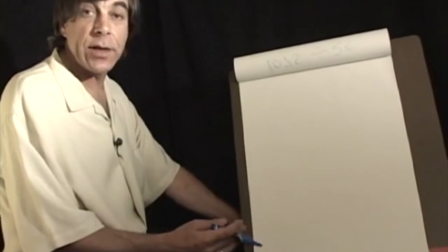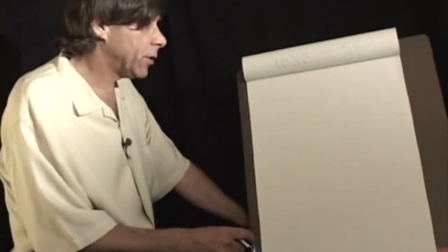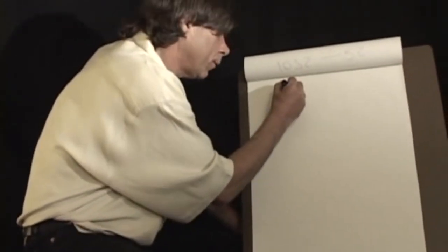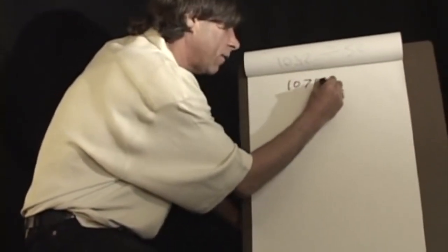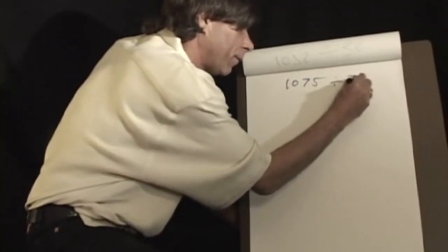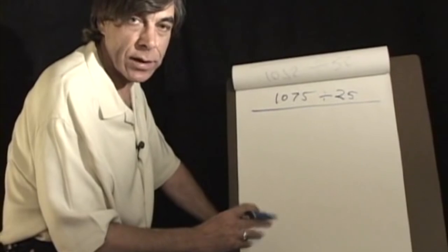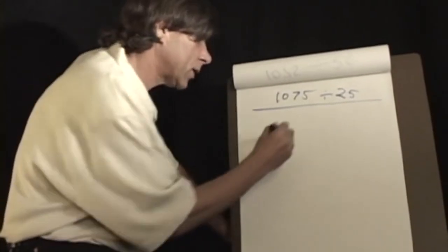Now division in computers or in ancient Egypt is just the opposite of multiplication. It's the inversion. So let's say we want to divide one thousand seventy-five by twenty-five. And we don't want to use the multiplication table, nor do we want to use any kind of long division.